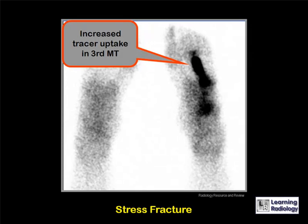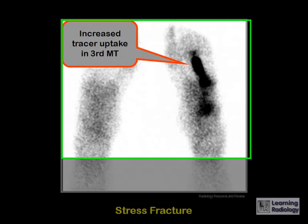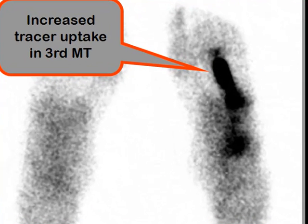This is an example of a nuclear medicine bone scan which shows in the right foot an area of markedly increased tracer uptake along the shaft of the third metatarsal. This patient also had a negative x-ray to accompany this positive bone scan, and the two of them together, as well as the history, are diagnostic for a stress fracture.